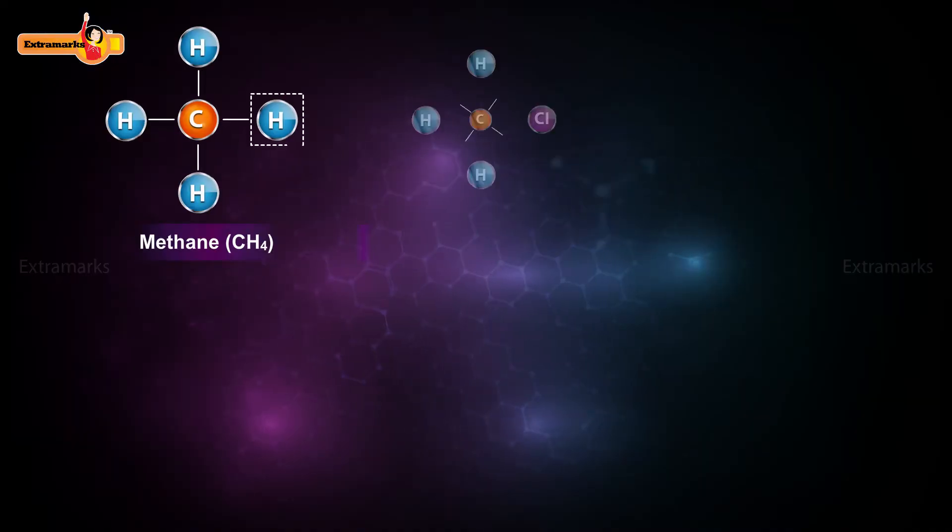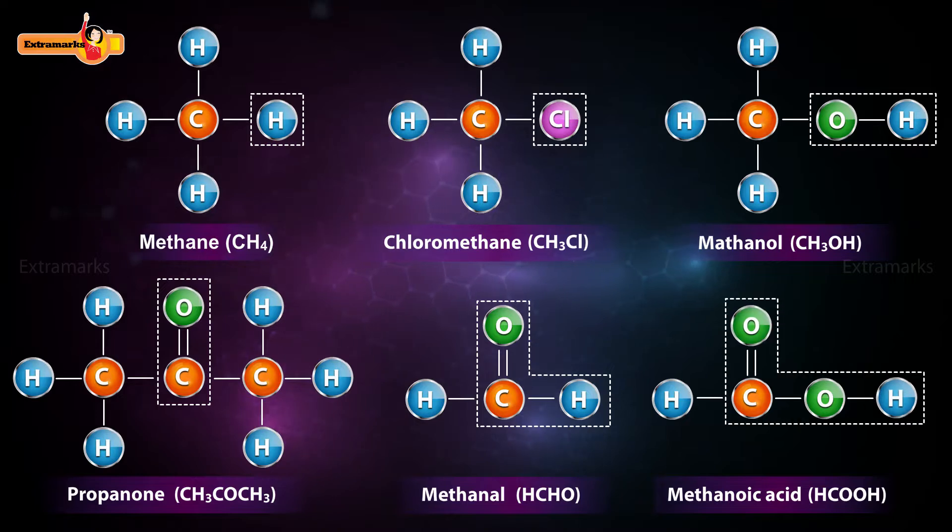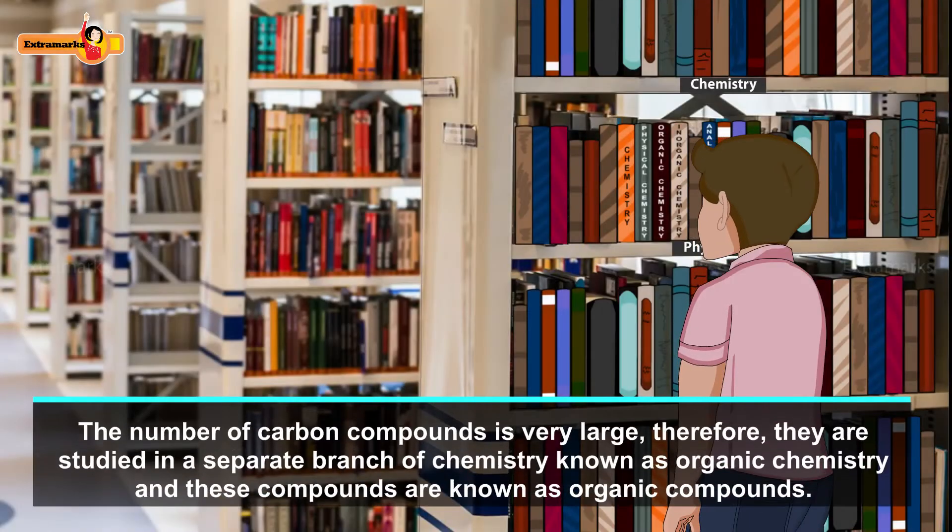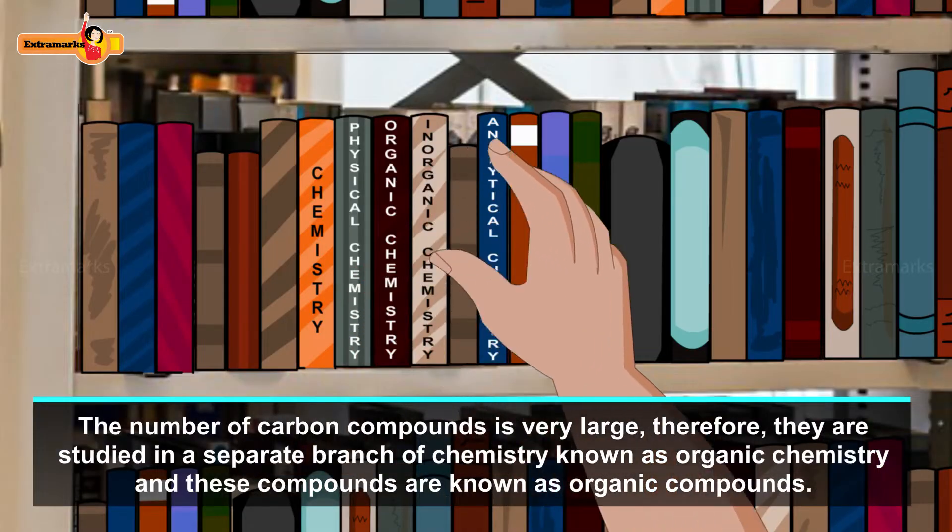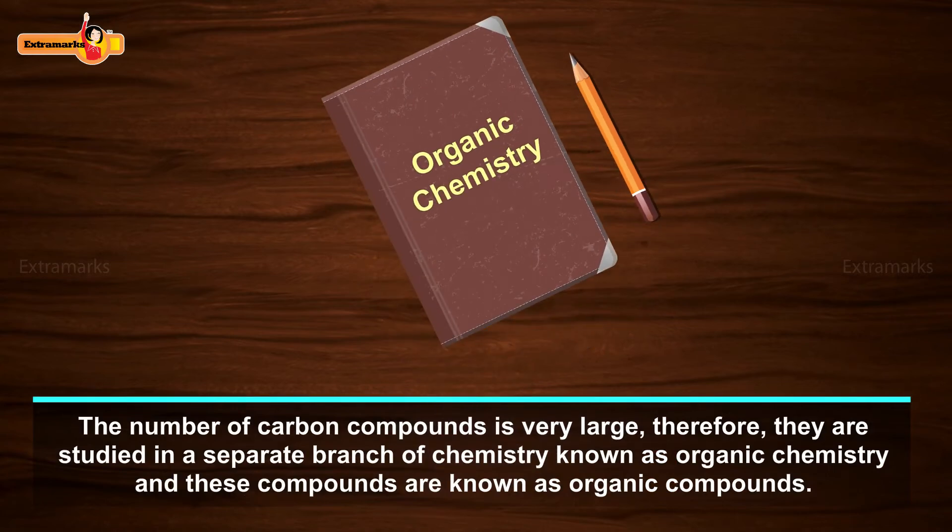Similarly, the large and ever increasing number of organic compounds can also be classified on the basis of the functional groups present in them. The number of carbon compounds is very large, therefore they are studied in a separate branch of chemistry known as organic chemistry and these compounds are known as organic compounds.